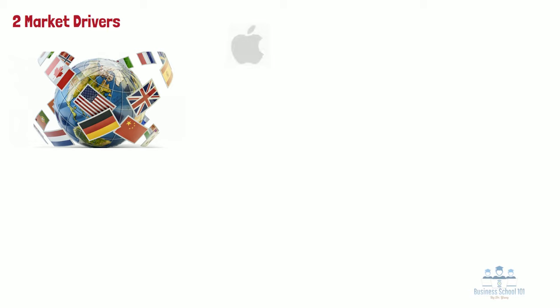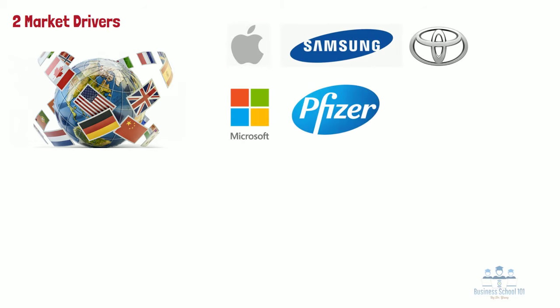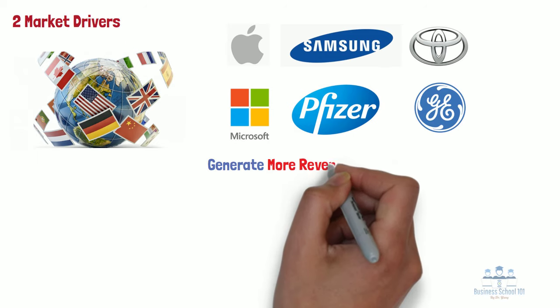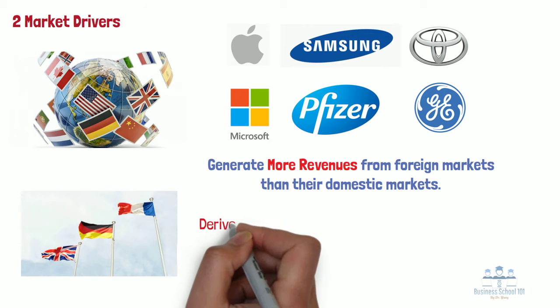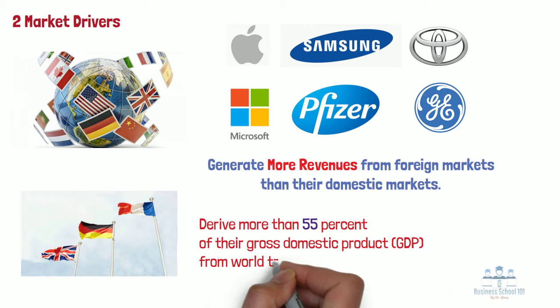Second, market drivers. As many domestic markets become more and more saturated, the opportunities for growth are limited, and global expansion is a way most companies choose to overcome the situation. Common customer needs are also incentives for firms to choose internationalization. Many Fortune 500 companies, such as Apple, Samsung, Toyota, Microsoft, Pfizer, and General Electric, generate more revenue from foreign markets than their domestic market. Besides companies, many countries also depend more on the international market than their domestic markets. For example, according to a recent report from the World Bank, France, Great Britain, and Germany all derive more than 55% of their gross domestic product from world trade.